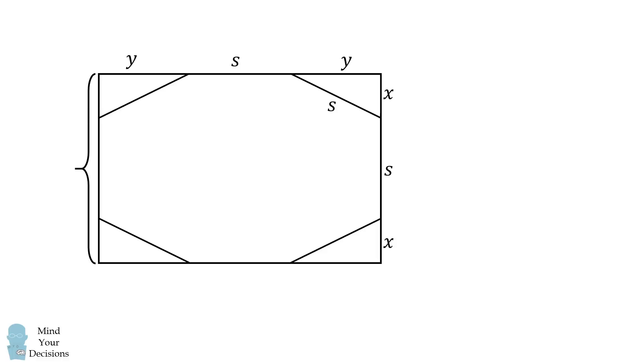Now suppose this side of the rectangle has a length of 4. That means 2X plus S is equal to 4. The other side length will be equal to 6, and that means 2Y plus S is equal to 6.